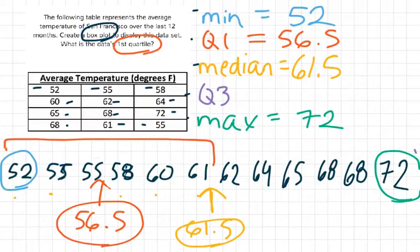And I got that, oops, let's go back. I got that because 55 and 58, there's a gap of three in between those. So half of three is 1.5. So 55 plus 1.5 gives me the 56.5 here.